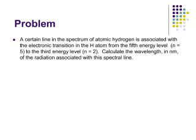And so we're going to go through and do a problem based on this. A certain line in the spectrum of atomic hydrogen is associated with the electronic transition in the hydrogen atom from the fifth energy level to the third energy level. Calculate the wavelengths in nanometers of the radiation associated with the spectral line. By the way, I hate the use of the word spectral here. I think spectroscopic would be a better term since we're not talking about ghosts, but that's an aside.